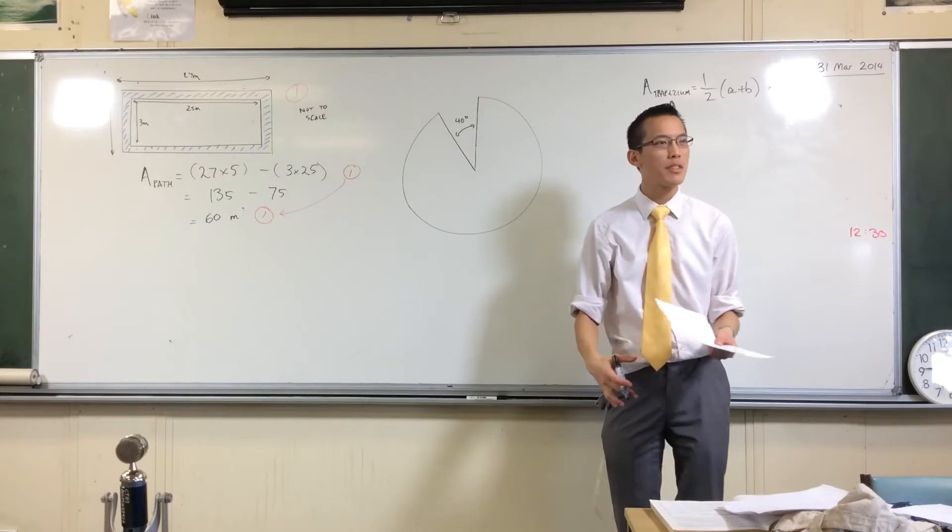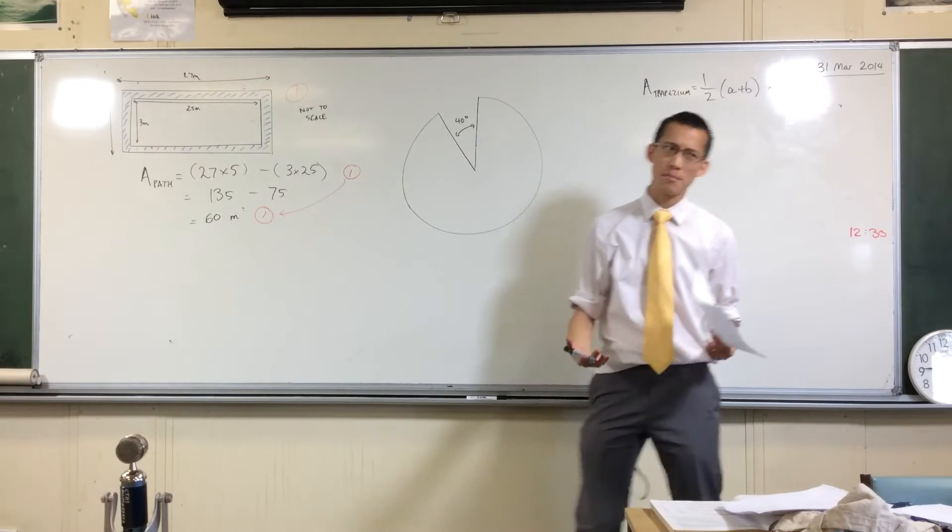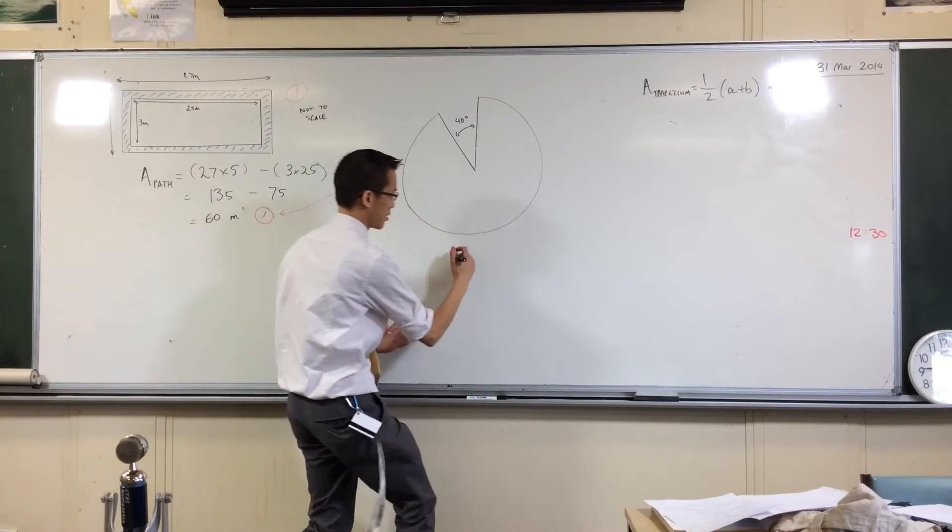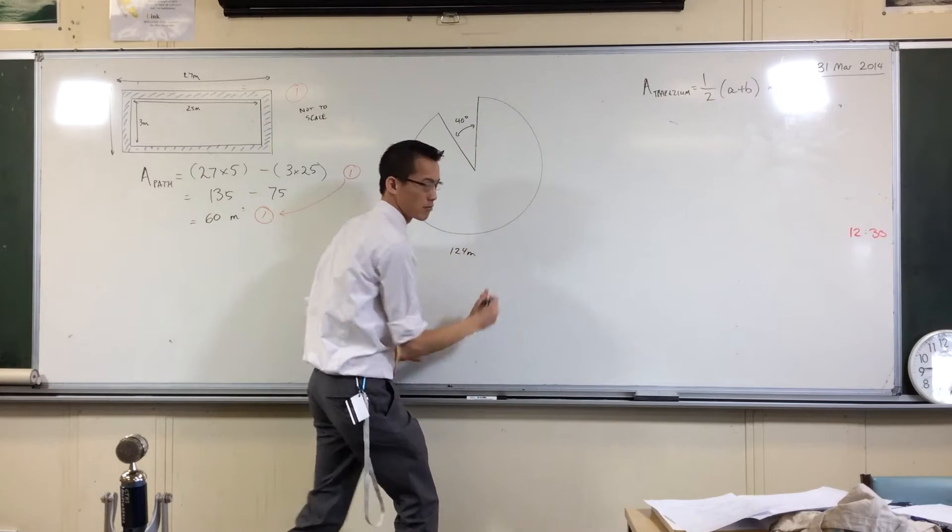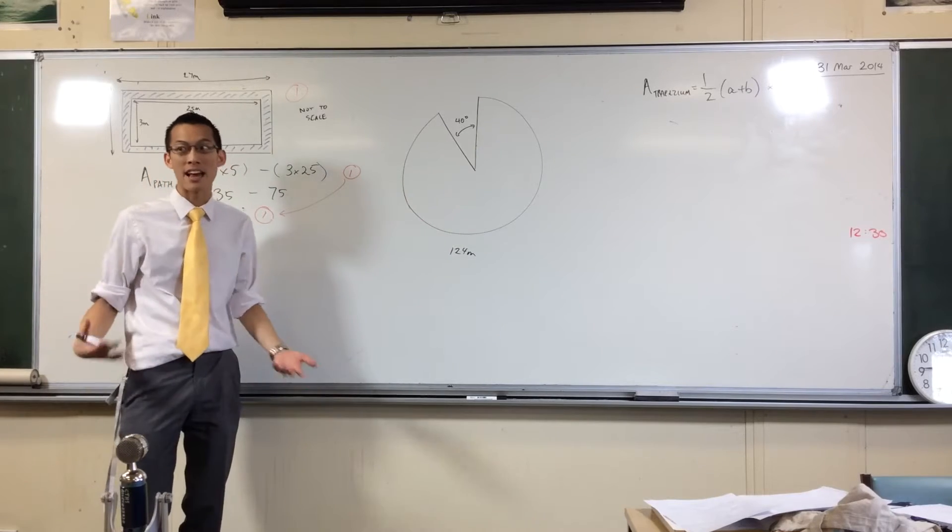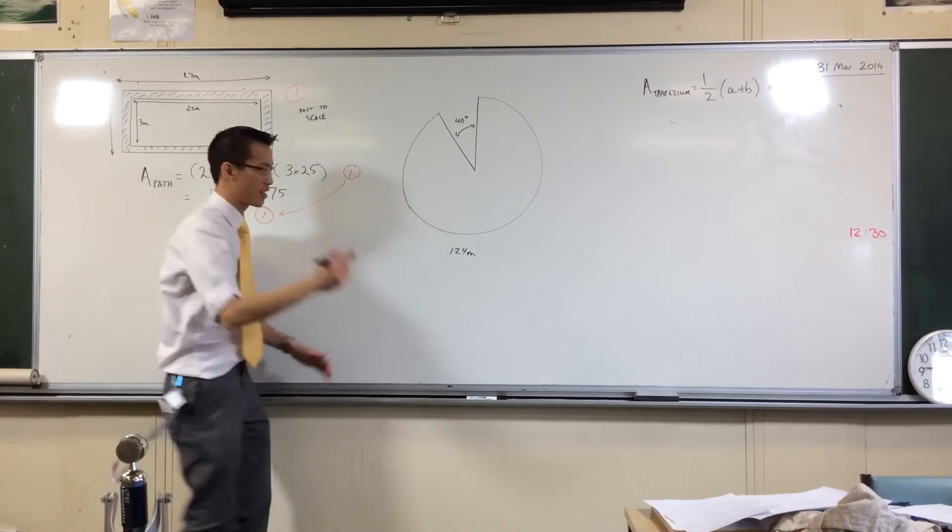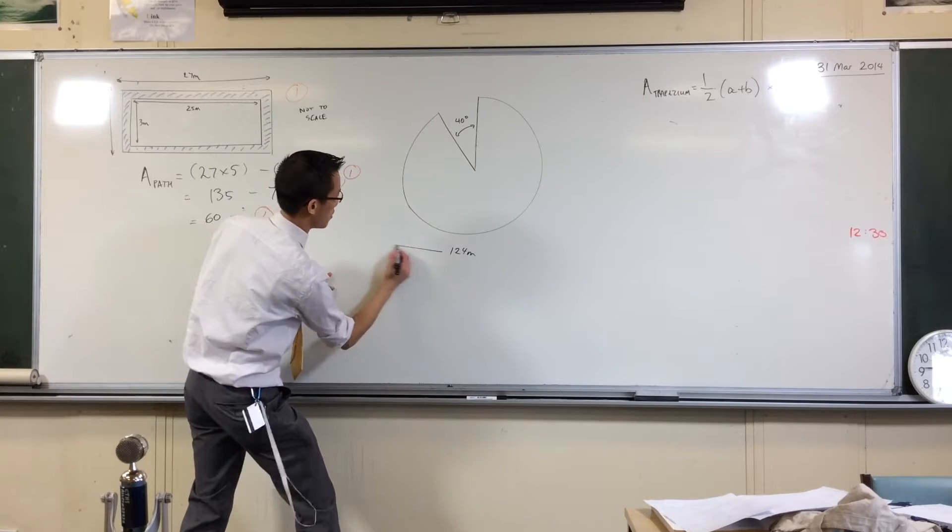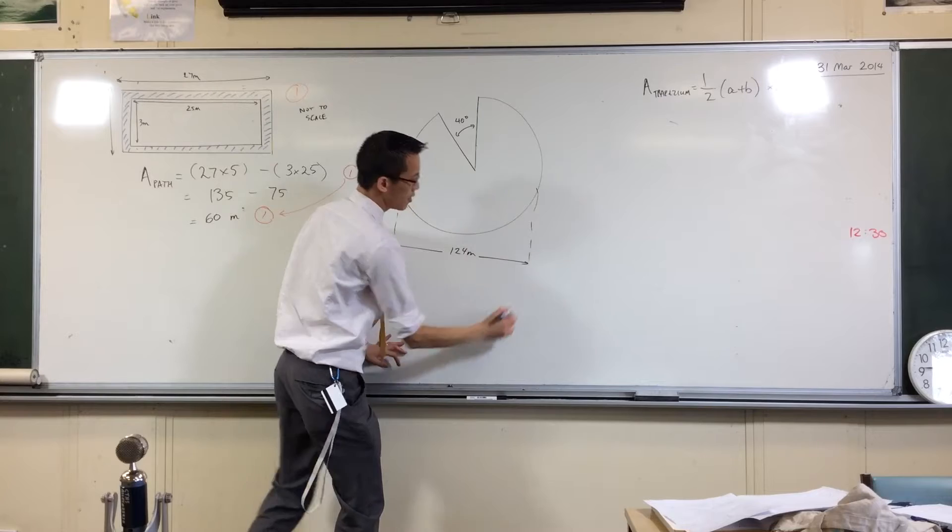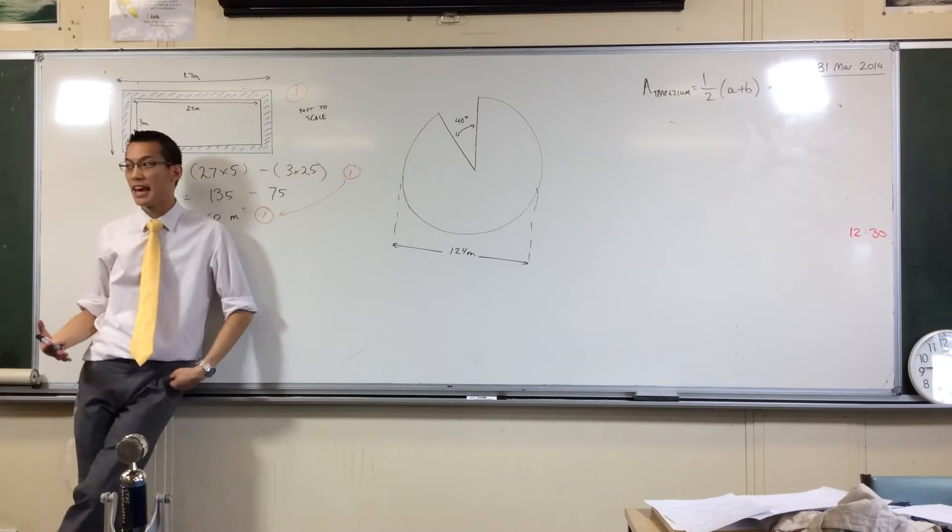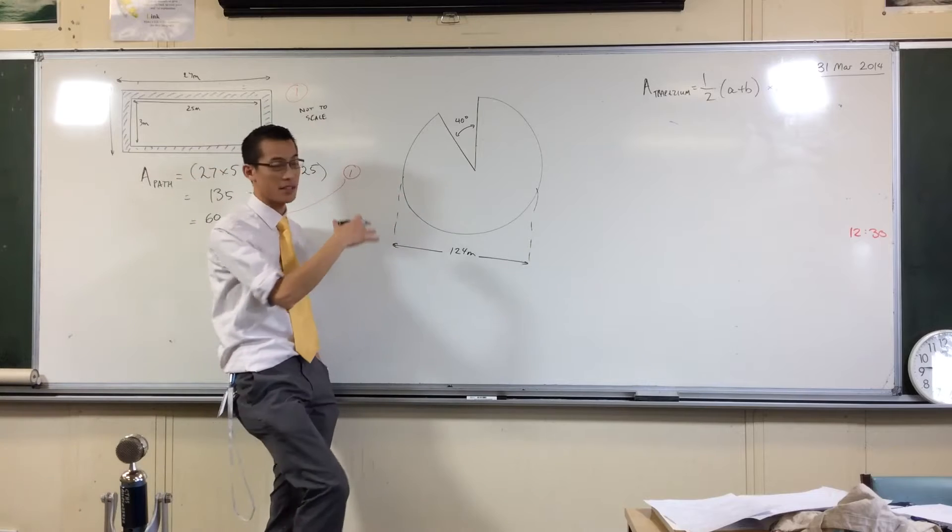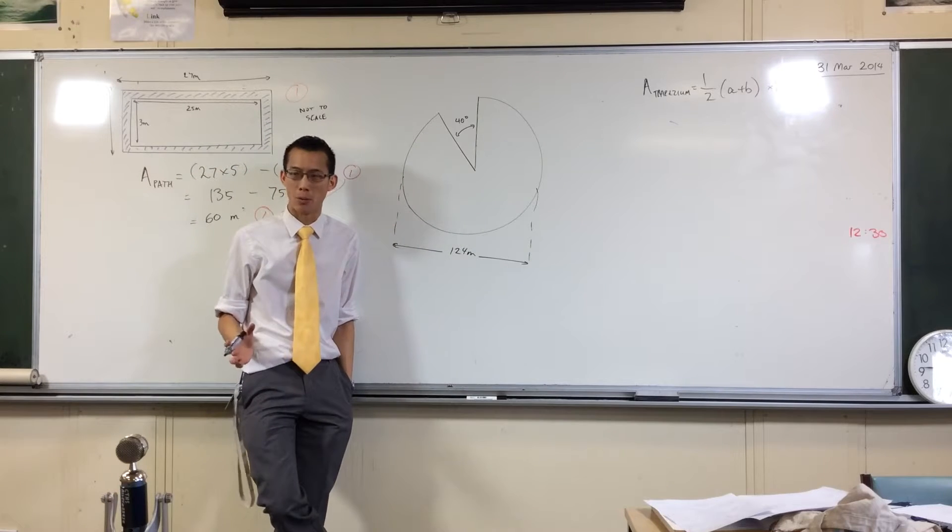And then what's the other measurement they give you? It has a name. The distance is 124 meters, but what's that related to this circle? It has a name. It's the diameter, that's right. Now it's important to get that it's the diameter because when we're working out the area in a second we don't want the diameter, we want something else.